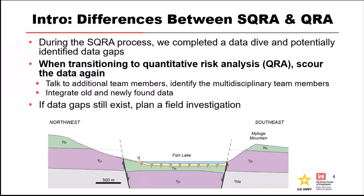The biggest difference between the SQRA and QRA process is the amount of time and budget. In the SQRA process, you typically have about a week to go over all the data, build the case, do your risk-driving failure modes, do your risk assessment, and write up the report. For a quantitative risk assessment, you do a much deeper dive — you're talking a budget of three to six months. It's a much more in-depth process where you can really tease out the risk-driving failure modes, usually on much higher-consequence dams.